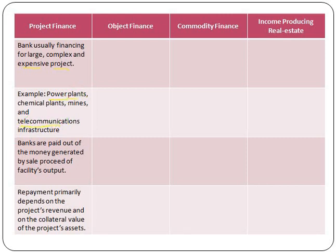In such transactions, banks are usually paid out of money generated by the contract of the facility output, such as electricity sold by a power plant. The consequence of such lending is that repayment primarily depends on the project's cash flow and also on the collateral value of the project's assets.